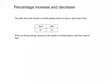Looking at percentage increase and decrease. If we look at this problem here, the table shows the number of mobile phones sold by a shop in April and in May. Work out the percentage increase in the number of mobile phones sold from April to May.